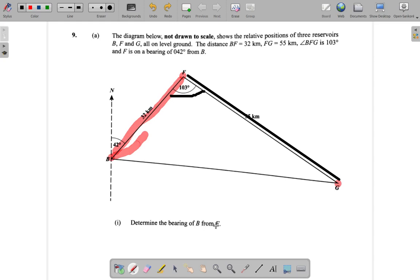Determine the bearing of B from F. Now, you have the bearing, F is on a bearing of 042 degrees from B. When you say from B, that means B is where the arc is. So this. And bearings are measured from north in a clockwise direction.